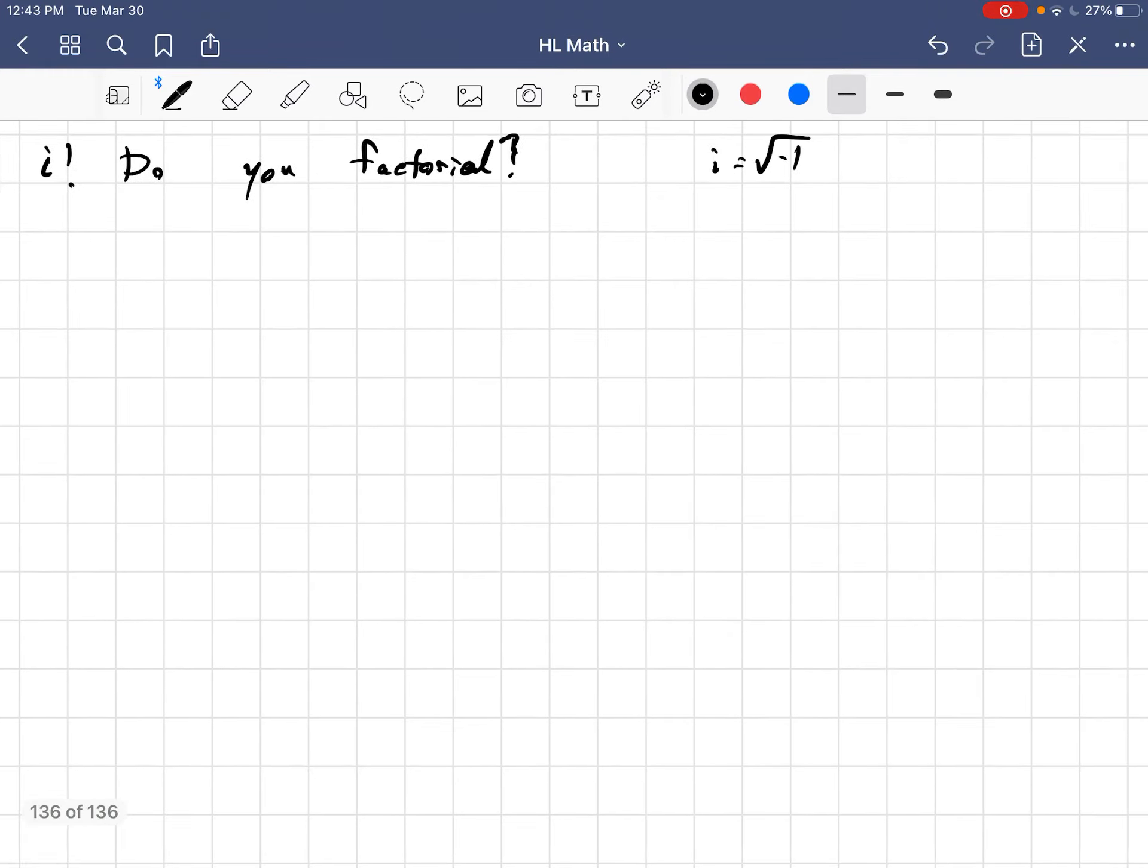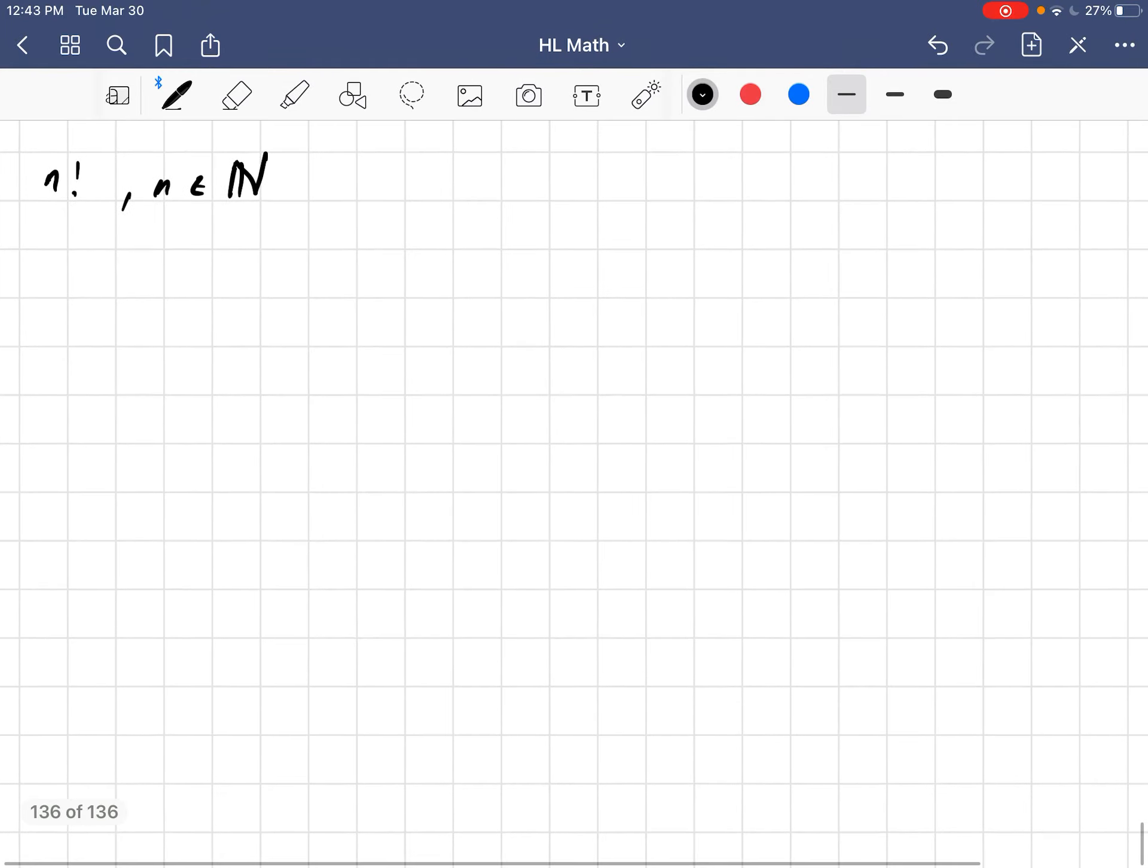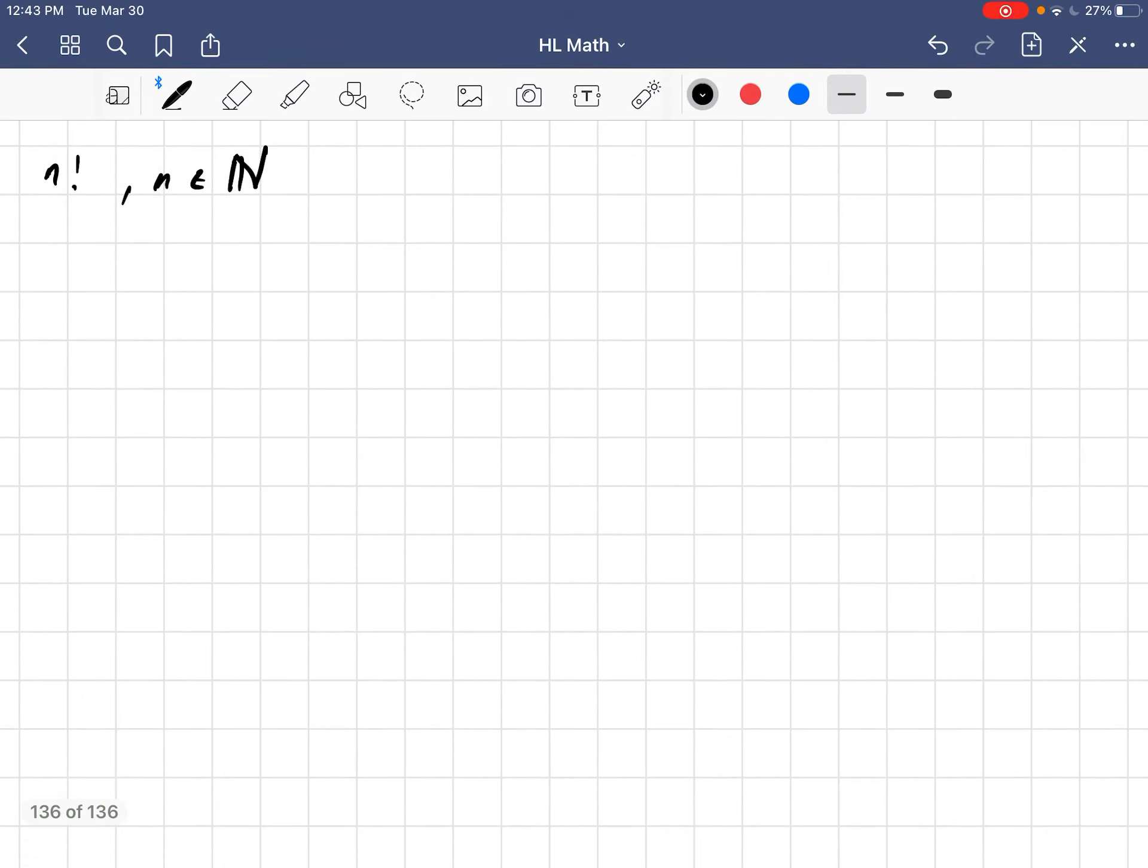See, when we're talking about n factorial, we mean n being a natural number. Which, unless you're in IB, the natural numbers start at 1, not 0. But anyway, that's just a gripe that I have with IB, the international baccalaureate program.